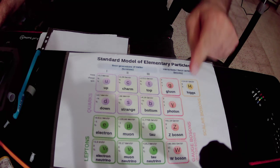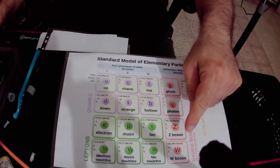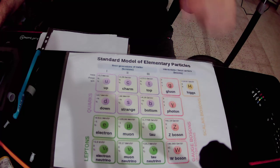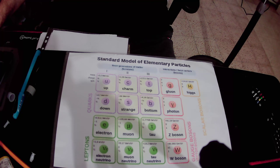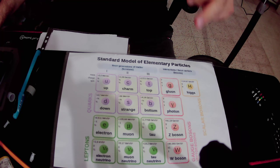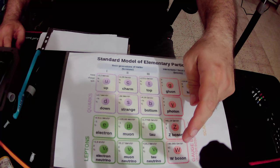Then we have the Z boson and W boson particles. They carry the weak force, which is responsible for the radioactive decay of atoms. We have two types of W boson.